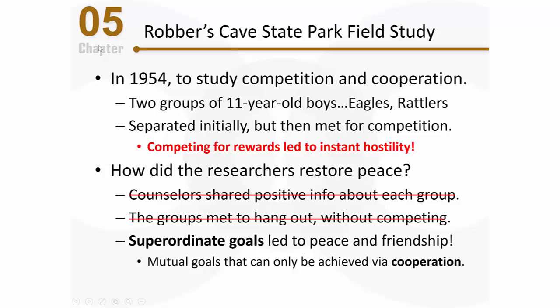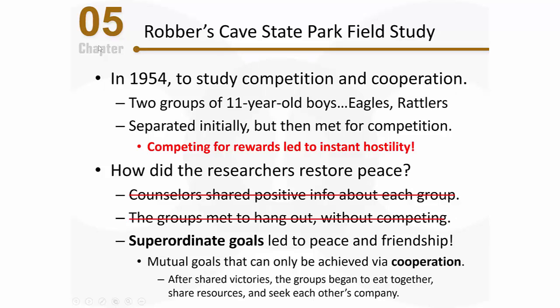Superordinate goals were very effective. After those shared victories, the groups began to eat together, were sharing resources, and were seeking out each other's company — they were genuinely friends. The study demonstrated that competition for scarce resources, like trophies and pocket knives, can really breed intergroup conflict, and this is the basis for realistic conflict theory.